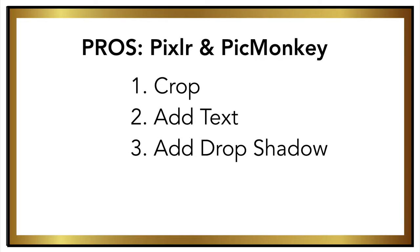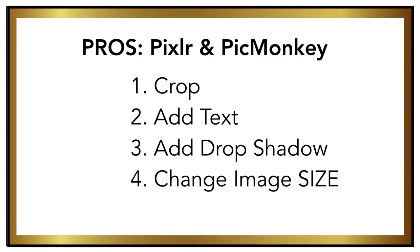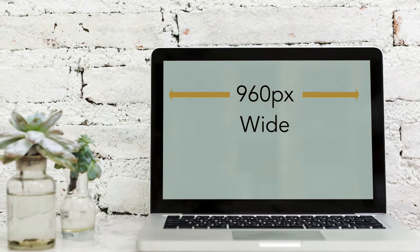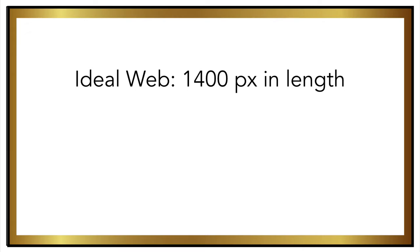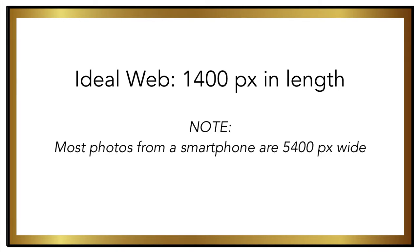The other thing businesses need to be able to do is change the size of their image. Because most high definition cameras take photos with a 5,000 by 7,000 pixel resolution, which is way too big for the web. When you take into account that the average laptop screen size is only 960 pixels across, most images need to come down to only about 1,400 pixels to appear super crisp. Anything larger than that will make your website load time very, very slow.